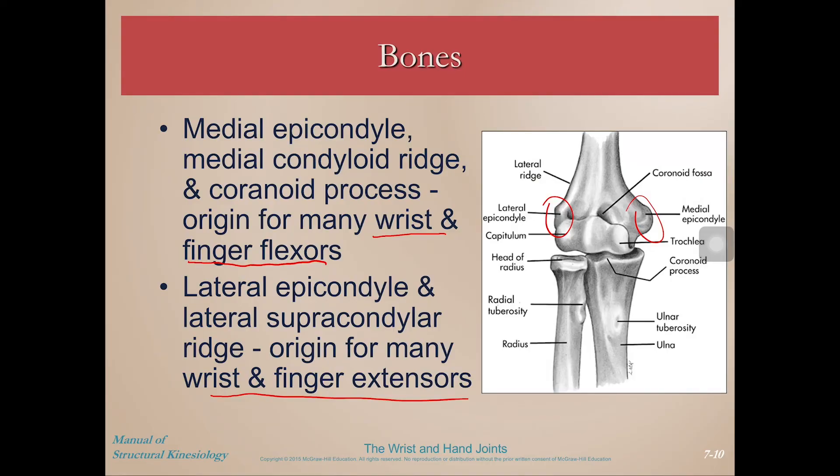That wraps it up for this video. The key bony landmarks to focus on are the medial and lateral epicondyle of the humerus, as well as knowing the wrist bones and bones of the hand. In following videos, we'll talk about joint motions and movements, then follow that up with muscle actions crossing those wrist and hand joints. Thanks for staying with me through this overview. Leave questions or comments below, and I'm Dr. Gooden, here to make kinesiology concepts understandable and digestible. Thanks for watching.